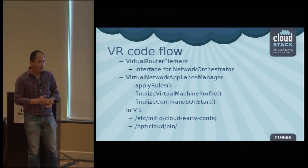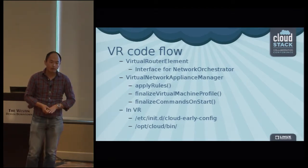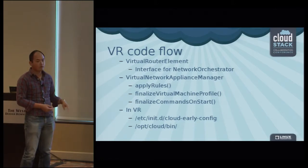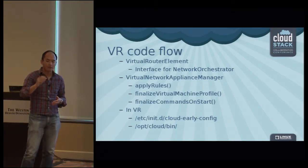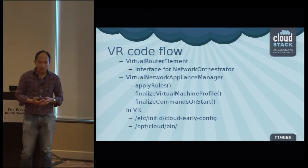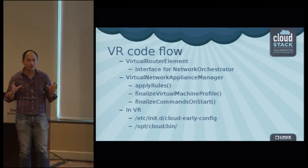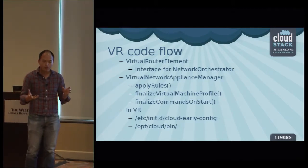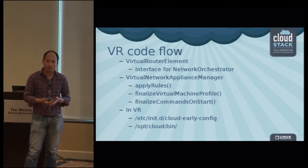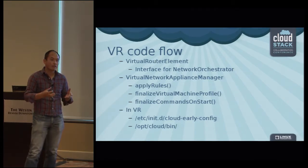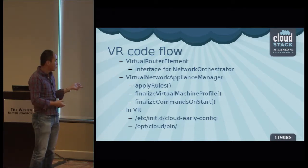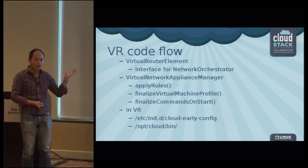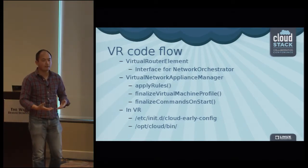The third function is finalize_command_on_start. This is different from finalize_virtual_machine_profile because that one acts when the VR is booting up and doing configuration at that time. The finalize_command_on_start will send out all the commands necessary to program the rules — firewall rules, DHCP entries. Whenever you restart or recreate this virtual router, you will see a lot of commands generated according to our database entries to determine the current state of the virtual router, and all those are formed into commands in finalize_command_on_start. Every command here will be sent to the virtual router after we confirm that the virtual router is fully initialized and its booting up process is complete.